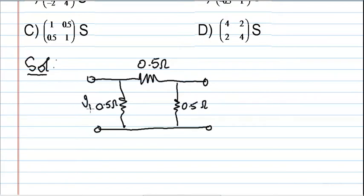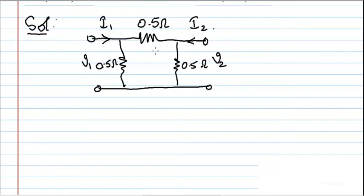The output terminal voltage is V2, the input current is I1, and the output current is I2. Now in solving this question we need to apply KCL at this node as well as at this node.